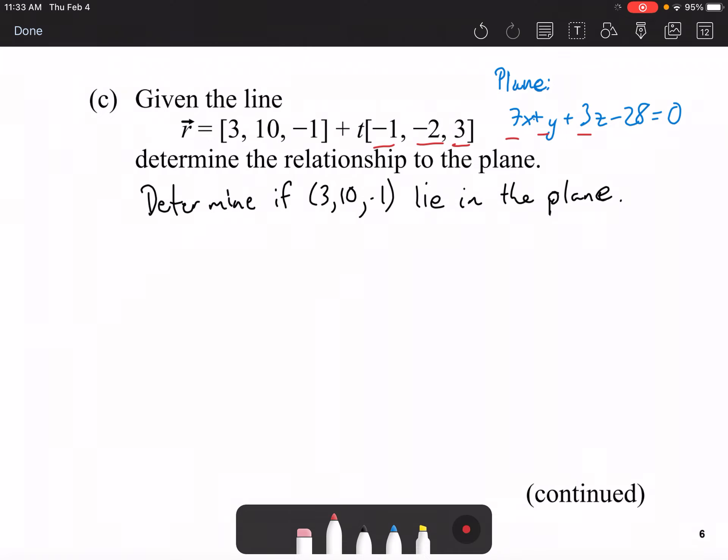So, to do that, all we have to do is substitute the value 3, 10, negative 1 into this equation and see if it equals 0. Because we don't know if it equals 0, separate it into the left side and right side. So, 7 times 3 plus 10 plus 3 times negative 1 minus 28. So, as you can see, 21 plus 10 is 31, 31 minus 3 is 28, 28 minus 28 is 0. So, therefore, 3, 10, negative 1 lies in the plane.